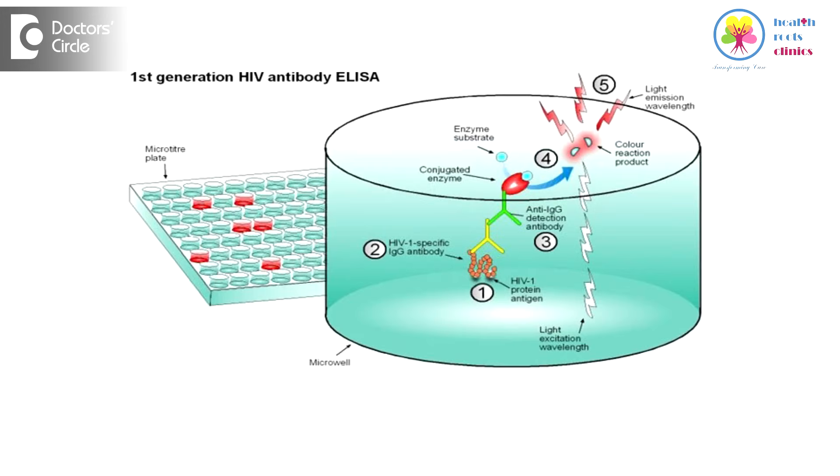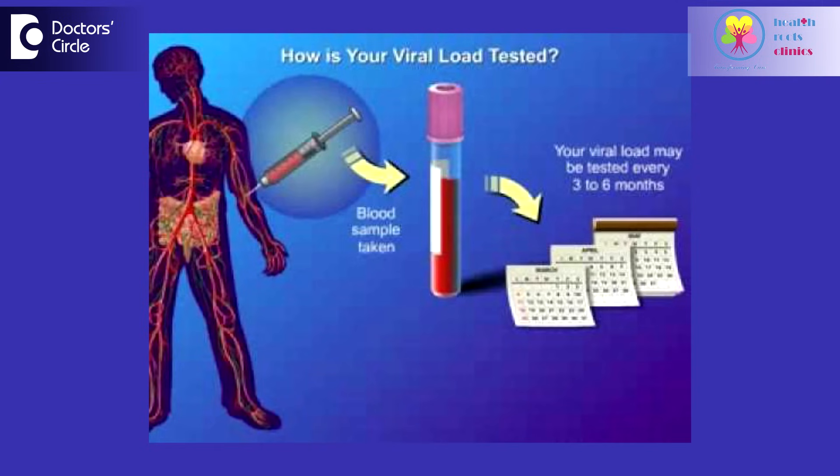The duration of the window period depends on which test is being used to identify HIV infection. The test which can identify HIV infection earliest after infection has occurred is called the HIV PCR test or the viral load. This can detect HIV infection as early as 7 to 10 days after infection occurs.